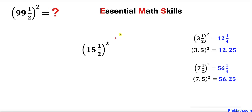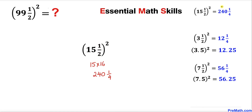Here's our next example. Let's look at fifteen. Fifteen times the next number, sixteen, gives us two hundred and forty. Now let's square this one over two, which gives us one fourth. So the answer turns out to be two hundred and forty and one fourth, and in terms of decimals, two hundred and forty point two five.